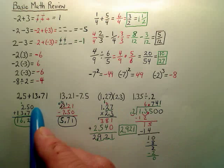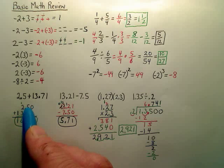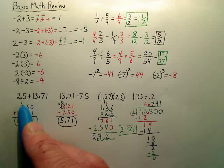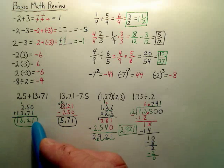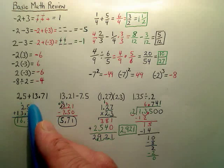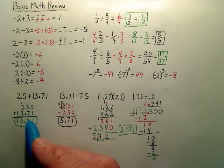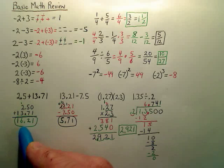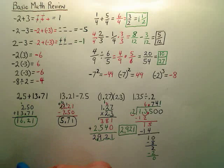Now, some decimals. When you add decimals, line up the decimals and just add straight down. For example: 0 plus 1 is 1, this adds to 12 so you carry a 1, then 2 goes here, and the rest follows. Just bring the decimal straight down for your answer.